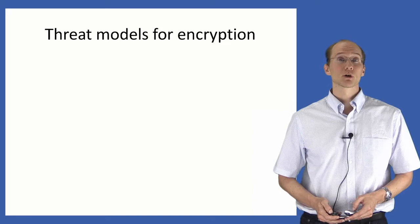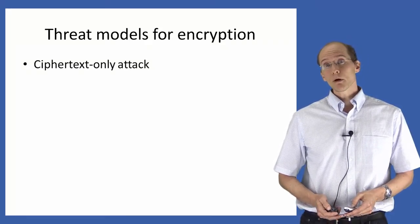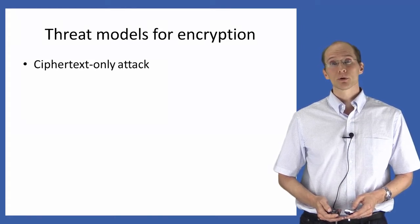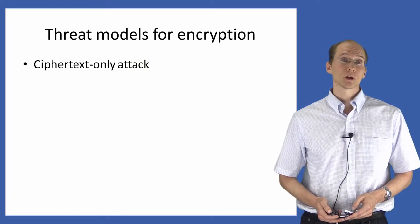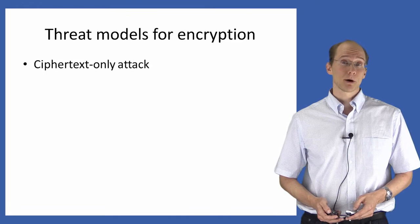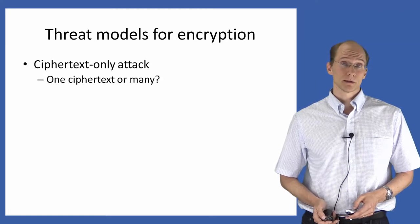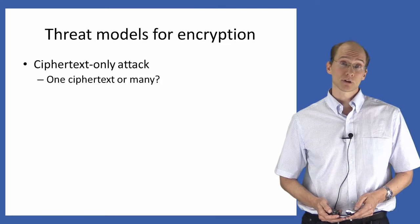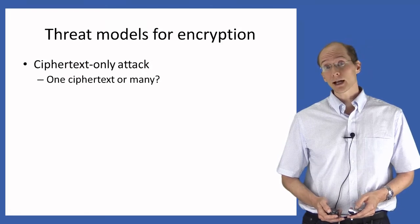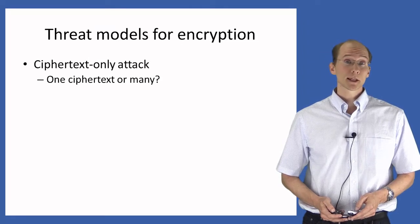There are several different threat models we could consider here. The most basic, and the one implicit in the figure on the previous slide, is known as a ciphertext-only attack. Here the attacker only gets to observe ciphertexts being sent by the parties, and nothing else. Even within this threat model, there are choices we can make — in particular, do we assume the attacker observes only a single ciphertext, or do we assume the parties encrypt multiple messages using the same key, and the attacker gets to observe multiple ciphertexts? As we'll see later on, this distinction makes a big difference.